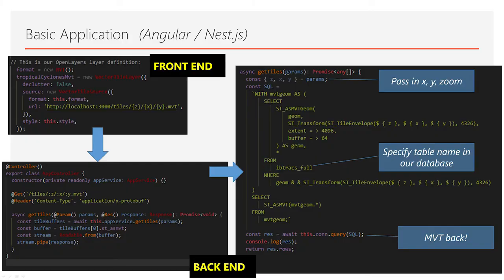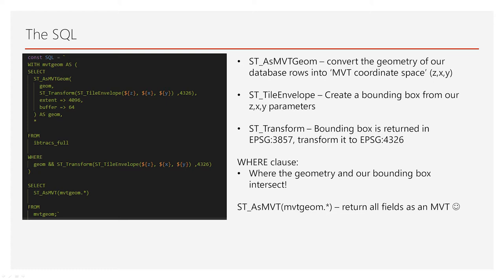And then we have a service that actually passes these parameters to the database and returns our MVT. So basically it looks something like this. It's super simple — all the workings are in the SQL here, specifically this function ST_AsMVT. It's a really cool feature in PostGIS. That will convert the geometry of our database rows into MVT coordinate space. We take our bounding box that the front end passes in, convert that into that space, and run an intersect between the rows in our database with that bounding box. That just gives us back the rows that we're interested in.